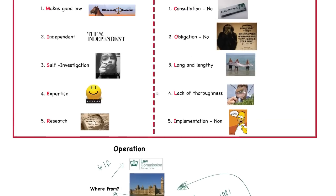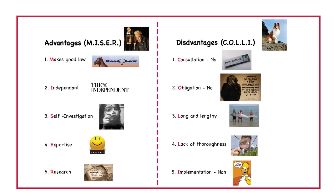What I want to look at finally is just what the advantages and disadvantages are. This will always be in AQA terms what you need to write about for the third part of a question — the 'evaluate the advantages and disadvantages' part. I've tried to be very clear and give you a memory aid for each of these. I've put the advantages down using the word MISER. The first advantage of the Law Commission is that it makes good law — it is able to be thorough, well informed, and therefore can produce good law.